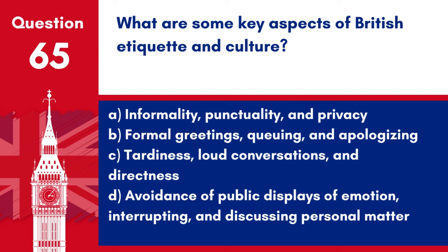Question 65. What are some key aspects of British etiquette and culture? A. Informality, punctuality and privacy. B. Formal greetings, queuing and apologising. C. Tardiness, loud conversations and directness. D. Avoidance of public displays of emotion, interrupting and discussing personal matters. Answer: B. Formal greetings, queuing and apologising. Key aspects of British etiquette and culture include formal greetings, queuing (lining up) and a tendency to apologise often.